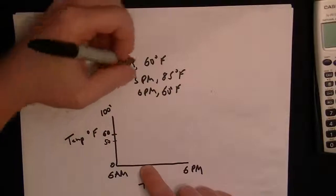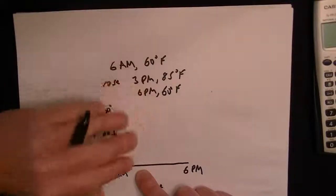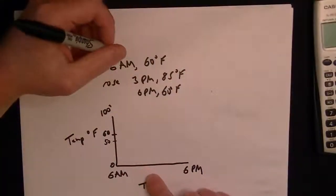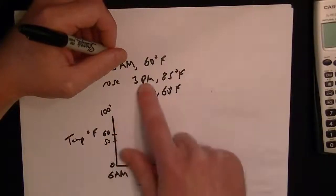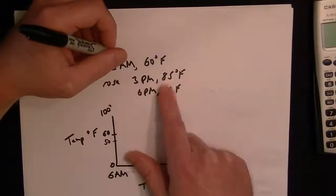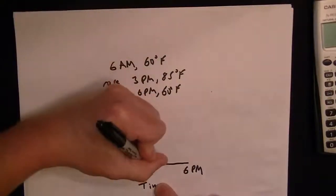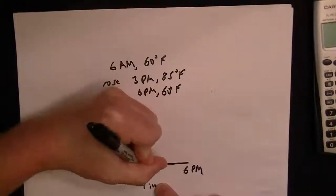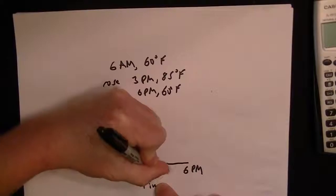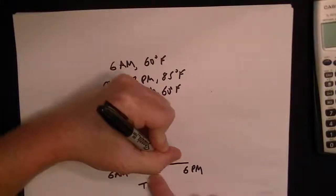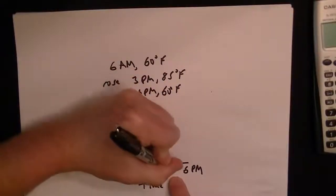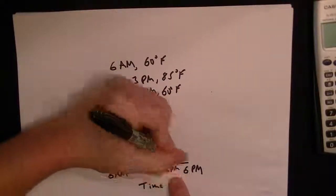So now it says it rises steadily, so that means we're dealing with straight lines. So we've got 6 AM at 60. So at 3 PM we've got 85, so about halfway through the day that's going to be noon, so that's 12 PM. And then another halfway between noon and 6 is 3, so that's the time we're interested in, is 3 PM.